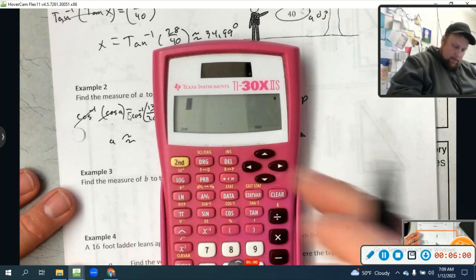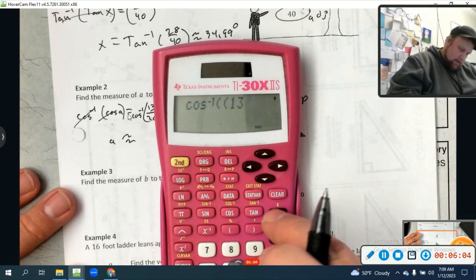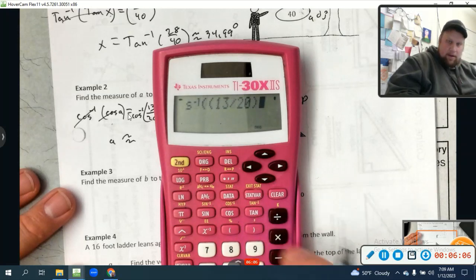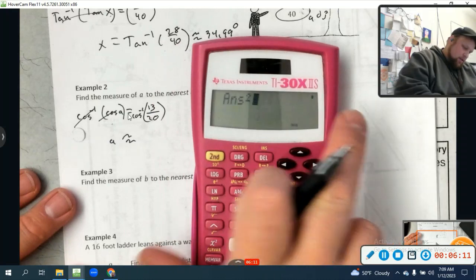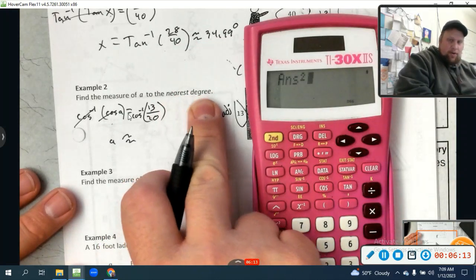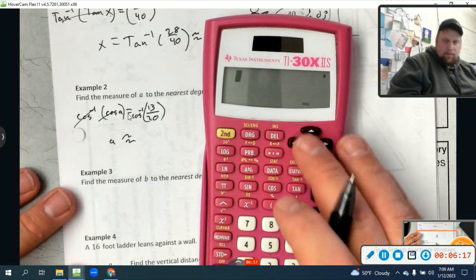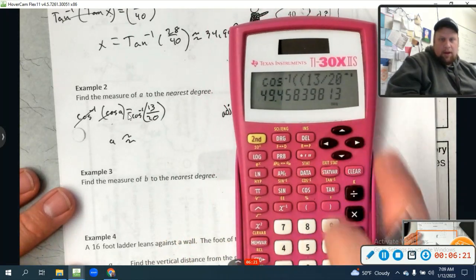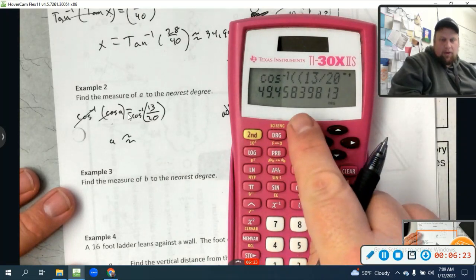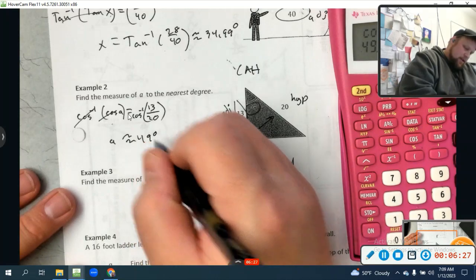A is going to be approximately, let's see, second function, inverse cosine, of 13 divided by 20. Approximately 49.46 degrees. Oh, it says to the nearest degree on this one. So that would be approximately 49 degrees. Look at that.